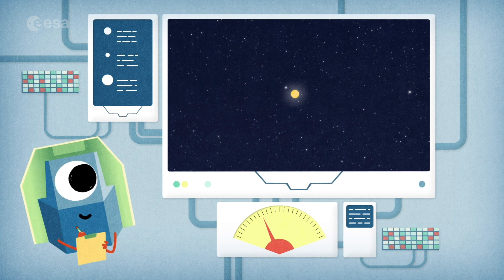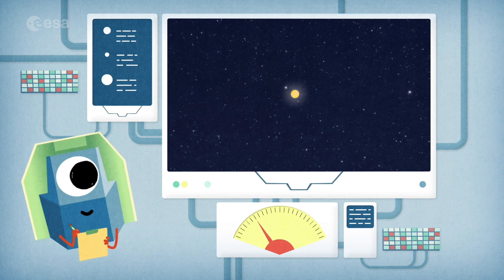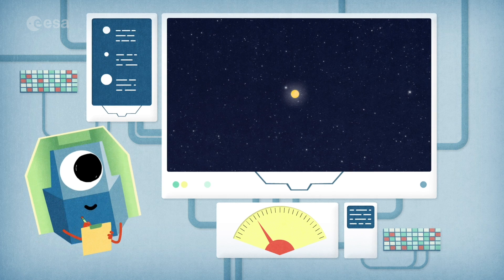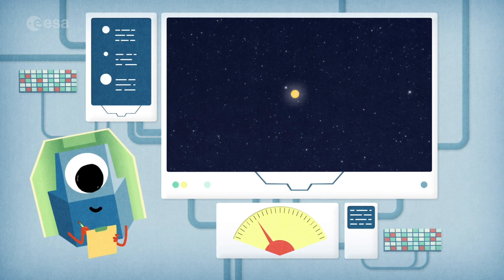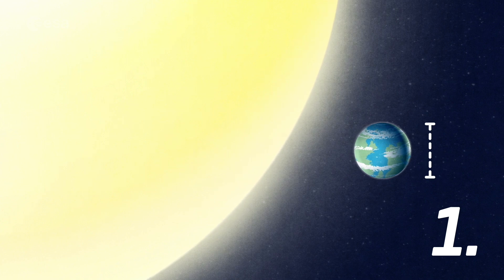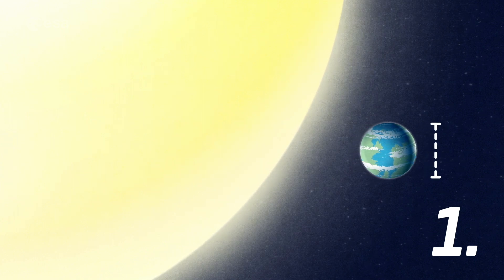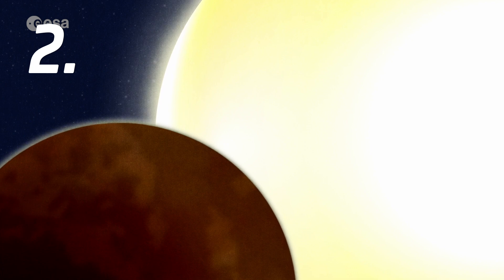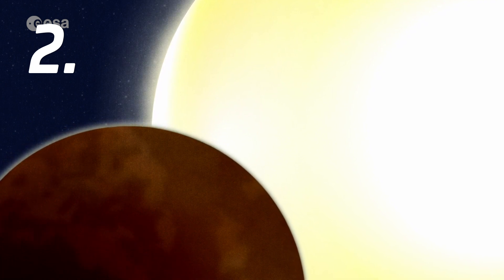As a photometer, an instrument that measures light, CHEOPS will measure starlight with incredible precision and focus on two big goals: very accurately measure the sizes of small planets, and discover more about the atmospheres of big exoplanets orbiting very close to their stars.